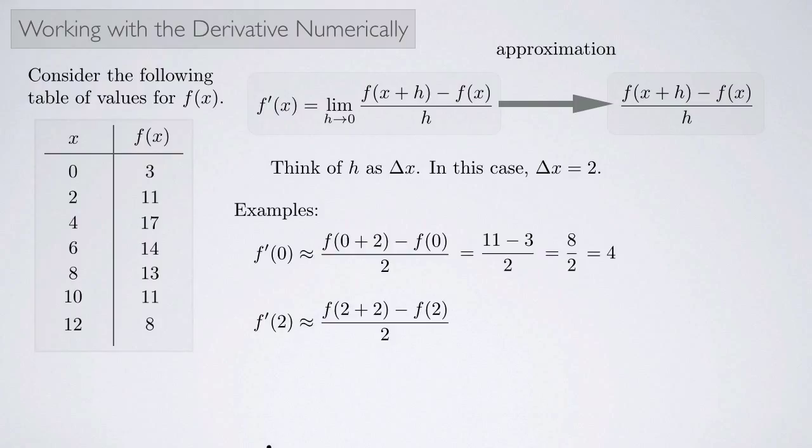How about f'(2)? Again I'll use the formula and I have f(2+2), which is the same thing as f(4) minus f(2), which is 17 minus 11 over 2, which is 6 over 2, which is 3.